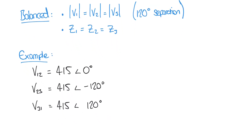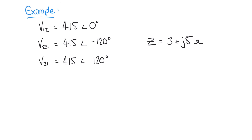We'll say that Z is equal to 3 + j5 ohms, with all three impedances equal. Let's begin by calculating the phase currents that flow through each of these impedances. We can do that very easily just by using Ohm's law — I equals V over R. The current that flows through a given phase must be equal to the voltage across that phase divided by the impedance of that phase.